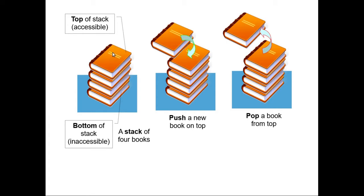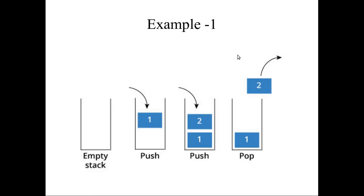The top of the stack is where you can add data and where you can remove data — it is a very important position. When you are adding a book, we use the push function. When you are removing a book, we use the pop function. For example, starting with an empty stack, if you insert the number 1 using push, and then insert number 2 using push again.